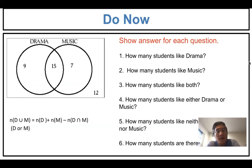You see the Venn diagram. In the Venn diagram, mostly we see two circles. One circle means one event. There's drama and music. So let's answer the questions briefly. How many students like drama? You see the circle is for drama. 9 students like only drama, and 15 students like drama and also music. 7 students like only music, and 12 students do not like either.